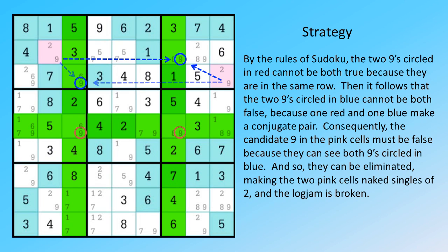And so, they can be eliminated, making the two pink cells naked singles of two, and the logjam is broken.